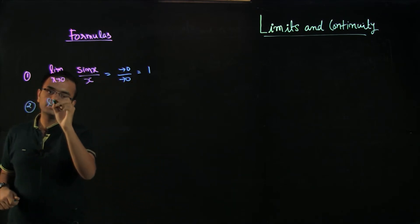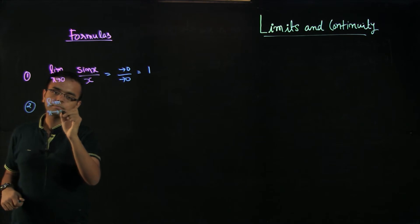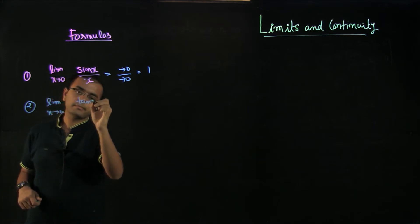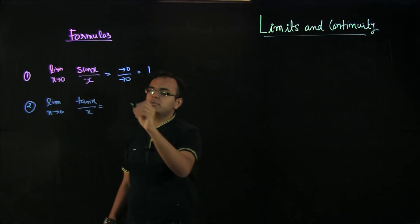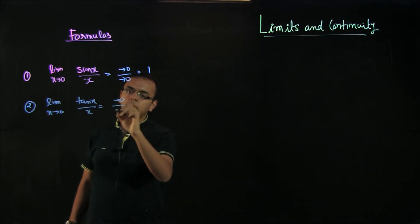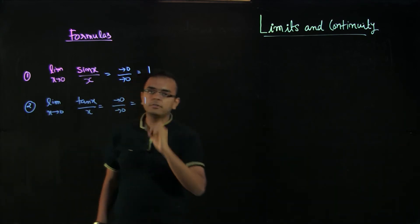Similarly, limit x tends to 0 of tan x by x - if you put the value again approaching 0 by approaching 0, and this value is also equal to 1.